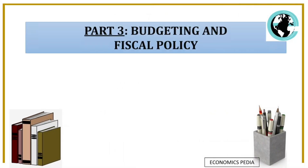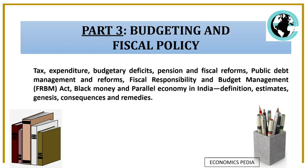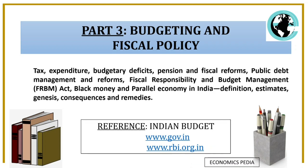Now let's move to Part 3, which is Budgeting and Fiscal Policy. This part comprises tax, expenditure, budgetary deficits, fiscal reforms, and the FRBM Act — which appeared in the 2020 past year examination. The reference comes directly from the Indian Budget. You do not need any books here, but you do need to get hold of important websites: gov.in and rbi.org.in. These are the sites you need before preparing for the upcoming examination.